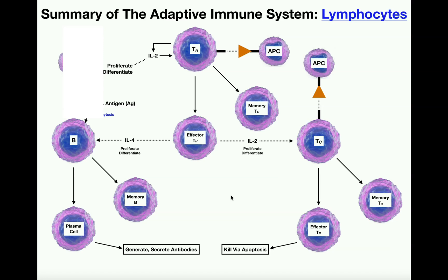Hopefully this video made sense. To summarize: the effector helper T cells are the generals; effector cytotoxic T cells are the infantrymen that migrate to and kill the pathogen via apoptosis; and plasma cells are like the air force — they secrete antibodies that go to the tissue while the plasma cells themselves stay in the lymphoid organ. Each cell type also has a corresponding memory cell for faster responses to subsequent exposures.